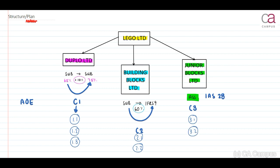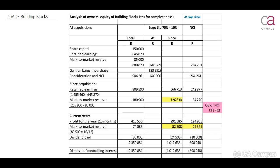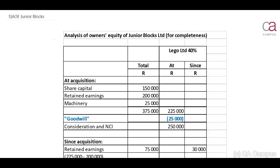If you need to include any additional calculations, you can start on a new page with C4, C5, C6, and so forth. It is important that when you look at your analysis of owner's equity for Duplo — your C1 — you are honest with yourself. If you indicate to your marker to refer to C1, where on that page is the amount you are referring to? Remember, your marker doesn't have time to use a calculator and search for an amount. Therefore, it is important that you clearly label this as C1, this as C2, and this as C3.